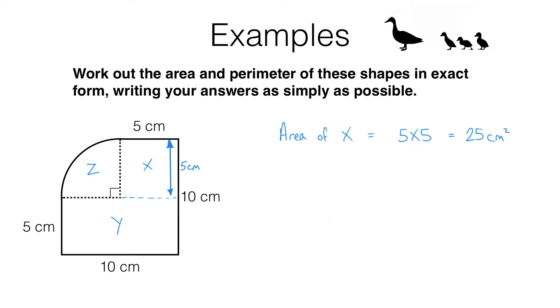Let's have a look at Y. This is a rectangle that is 5 centimeters high and 10 centimeters across. So the area of Y is going to be 5 times 10, and that equals 50 centimeters squared.